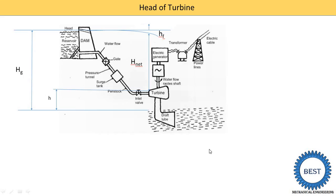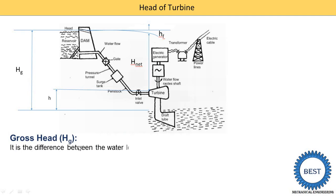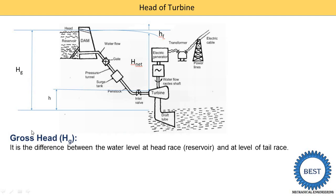First, we learn the gross head. Gross head is denoted as Hg — H means head and G means gross. The gross head is defined as the difference between the water level in the reservoir or head race and the level of the tail race. This difference is denoted in the figure as Hg.